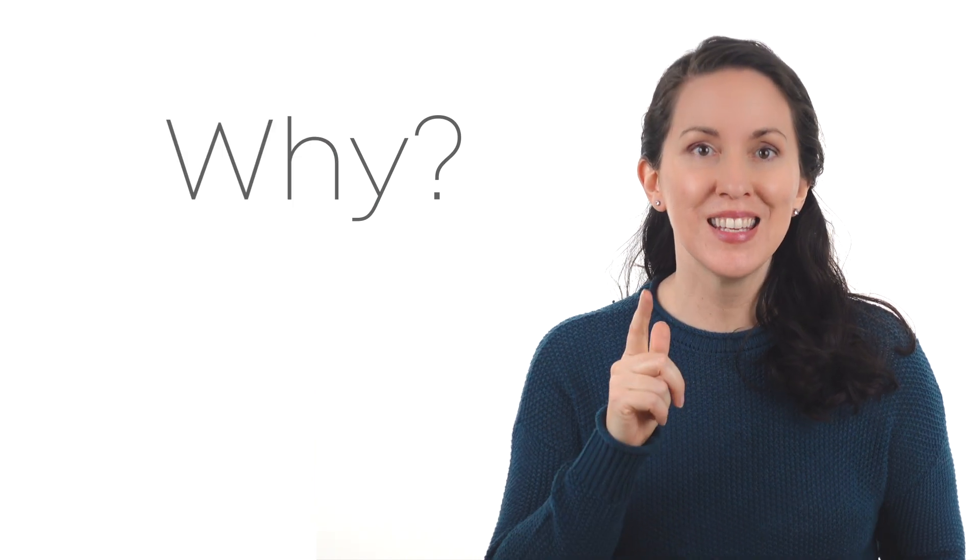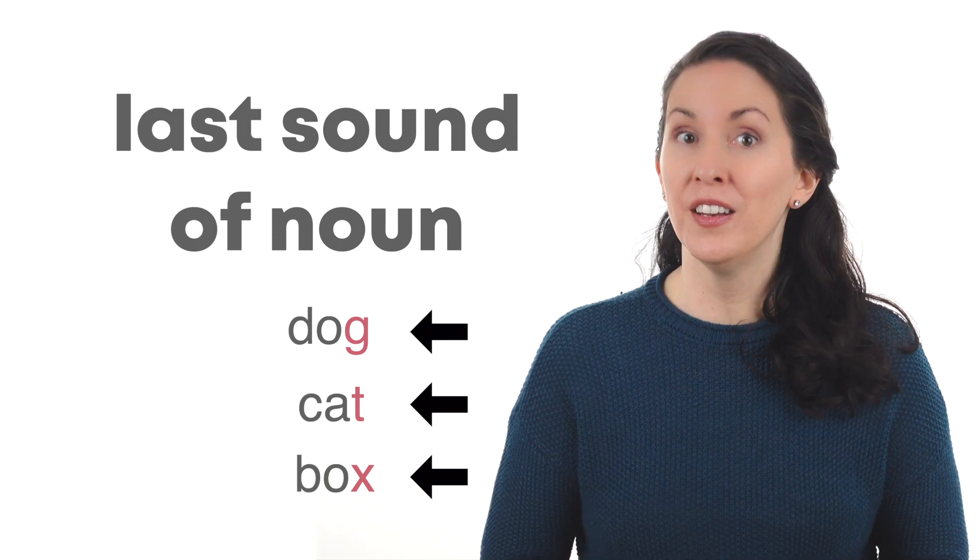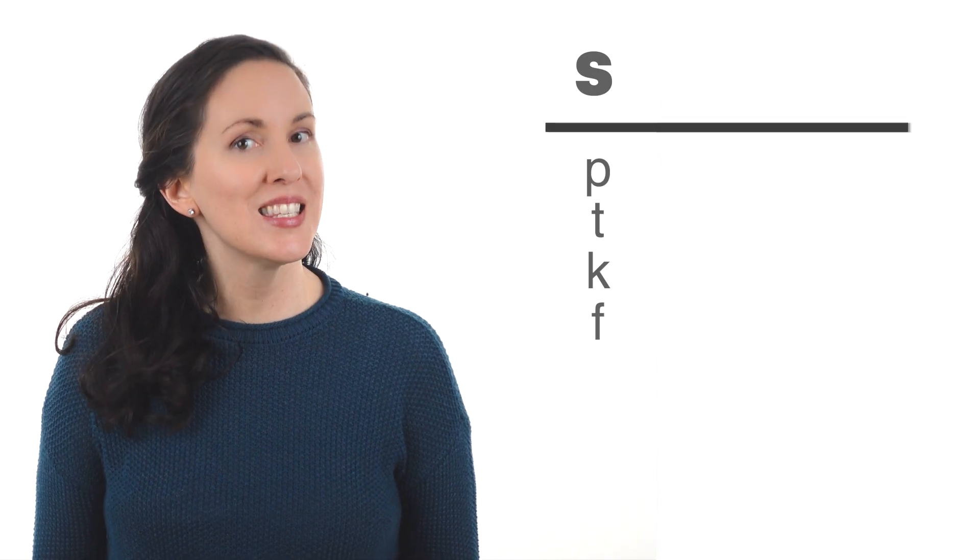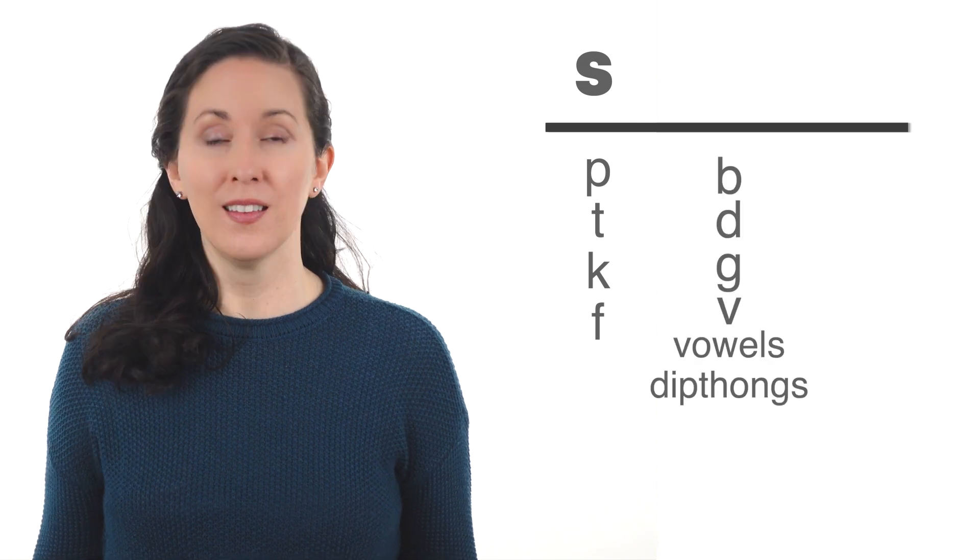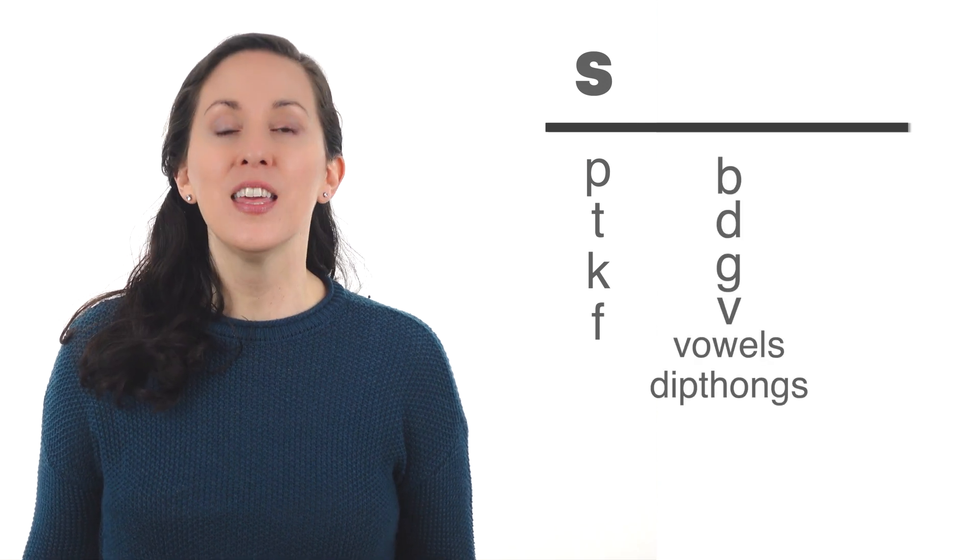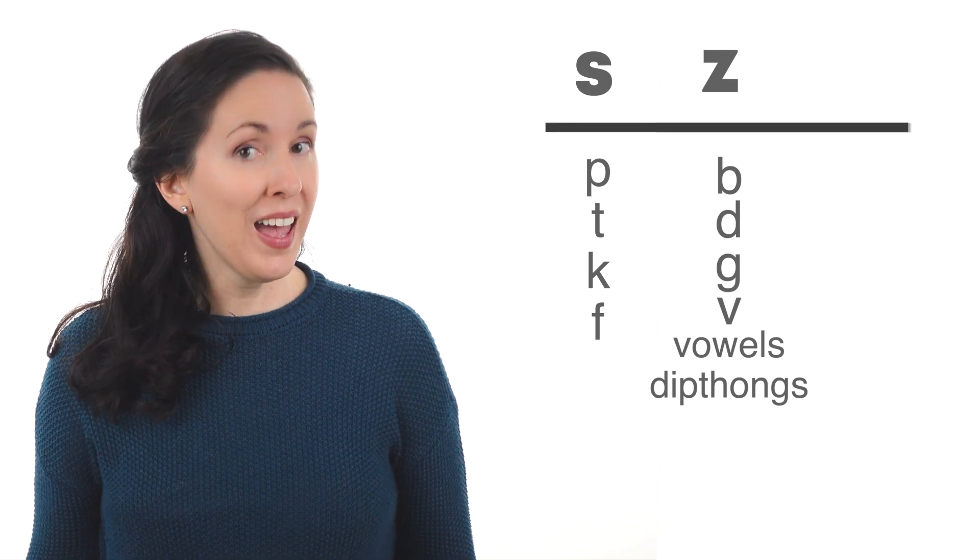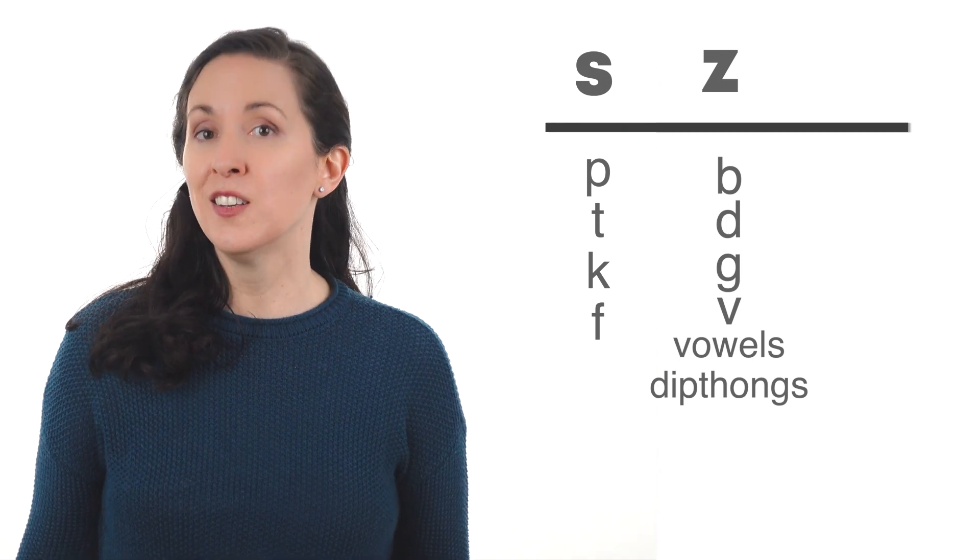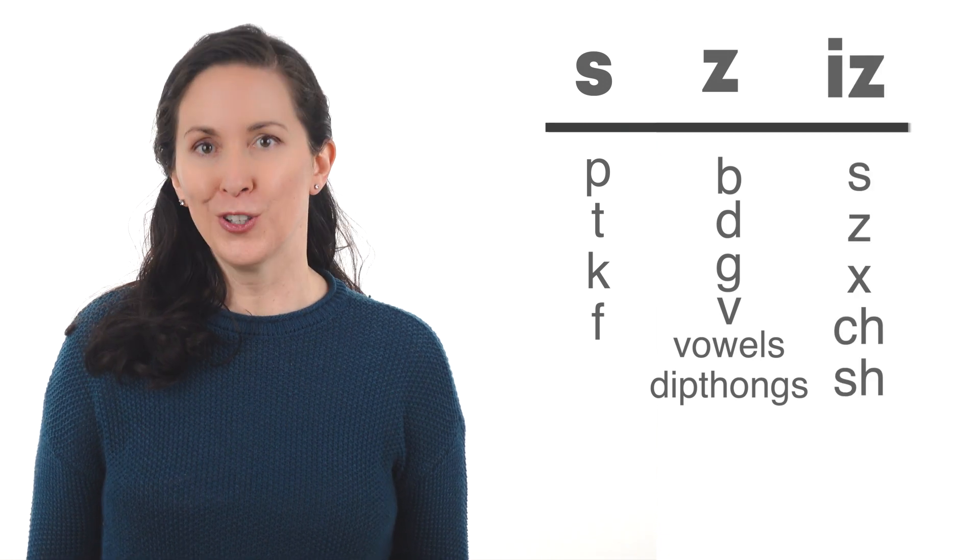Here's the secret. Look at the last sound of the noun. Words that end with these sounds have the S plural sound. Words that end with these sounds have the Z plural sound. And words that end with these sounds have the IS plural sound.